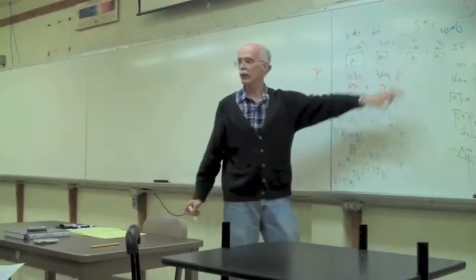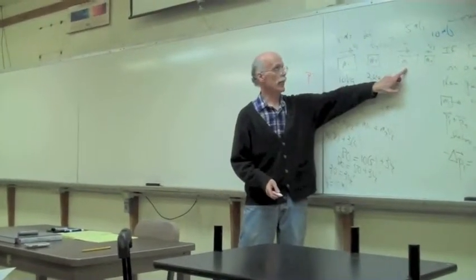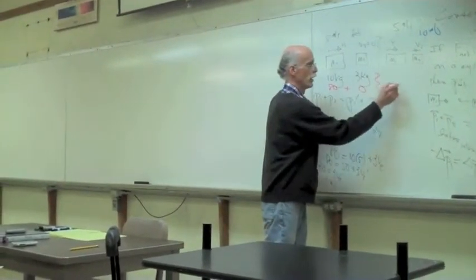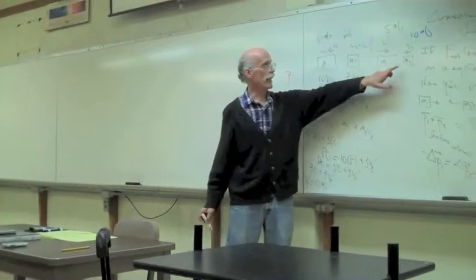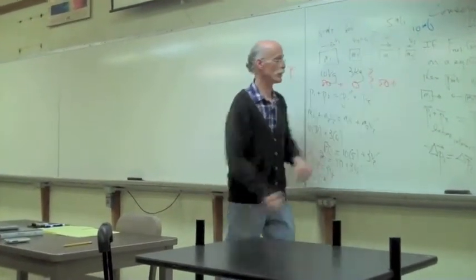Afterwards, what is the momentum of the first mass? 10 mass times the velocity of 5, it's what? It would be 50. And the second mass? It's a mass of 3 times the velocity of 10, the momentum would be 30.